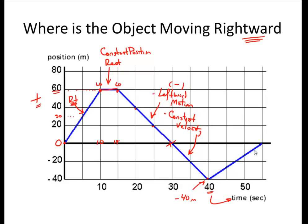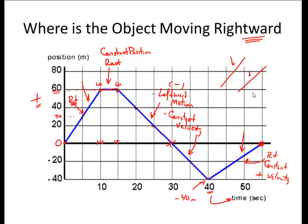At 40 seconds, something different happens — the object starts moving back closer to where it began. For the next 15 seconds, the object is going to go rightward, with constant velocity, positive velocity, taking it all the way back to where it began. I know my object has returned home because its position is back at 0 meters. A line going upward on a PT graph means rightward motion; a line going downward means leftward motion.